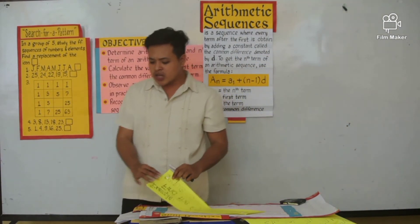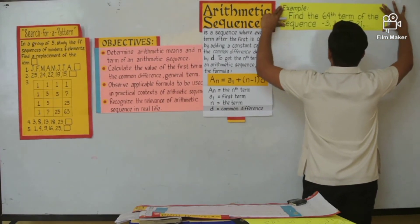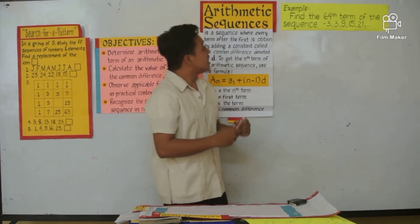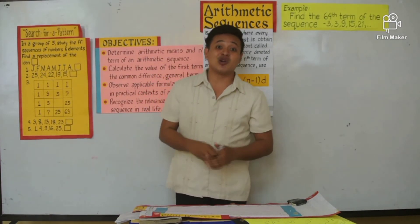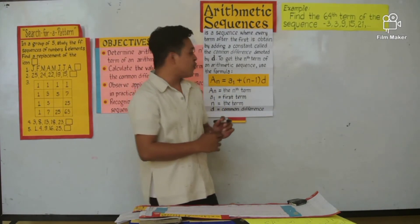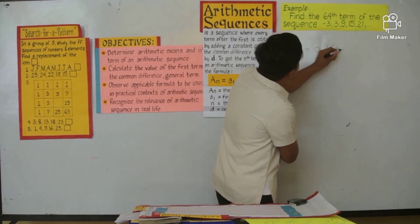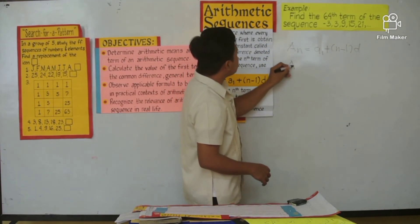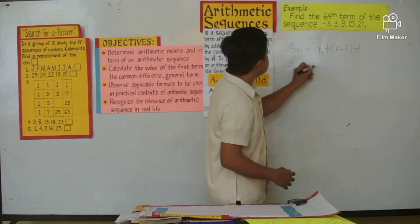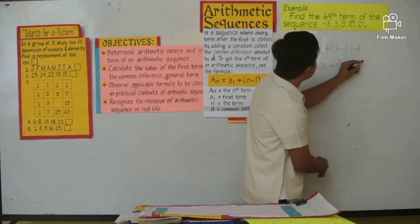So to further elaborate, I will give you an example of how this formula works. Kindly read, Rina: find the 64th term of the sequence negative 3, 3, 9, 15, and 21. The problem asks for the 64th term, so we are going to use the formula. A sub n equals a sub 1 plus n minus 1 times D. Since we need to find the 64th term, a sub 64 equals negative 3 plus 64 minus 1 times D.